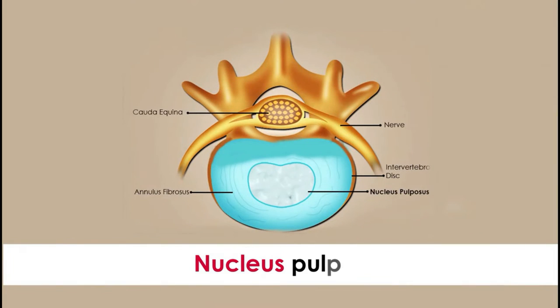God has designed our vertebral column to be made up of a number of small bones, each known as a vertebra. In between two vertebrae, we have a cushion-like material known as a disc or intervertebral disc. This intervertebral disc is just like a cushion — it has an overlying layer like leather over a cushion, and a center portion called the nucleus pulposus, which is like cotton inside a cushion.